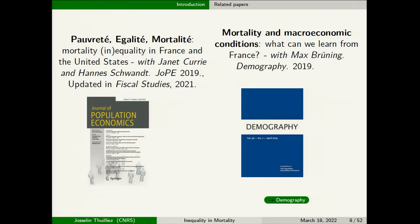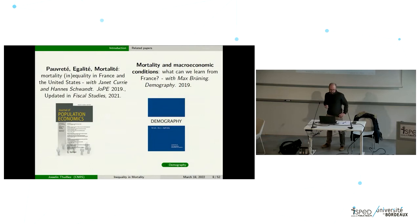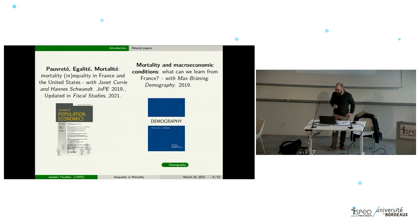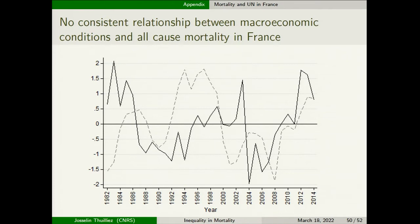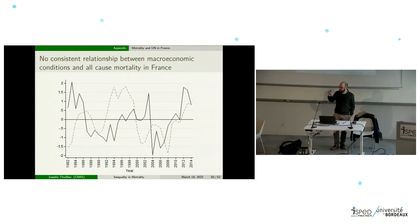I will comment on a few papers today. The first is 'Pauvreté, Égalité, Mortalité' published in the Journal of Population Economics with my colleagues Currie and Trent. I will also briefly cover a paper published in Demography analyzing the link between mortality and macroeconomic conditions in France over about 30 years. We find no consistent relationship between macroeconomic conditions and all-cause mortality in France — Jérôme knows this kind of work well because he worked on the topic a few years ago.